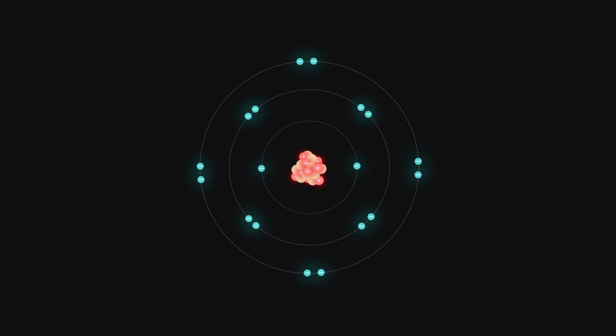The chlorine atom is neutral to start with. It has the same amount of positive protons and negative electrons. When it gets that extra electron, it becomes a negative ion with a charge of minus one. We write it as Cl minus.